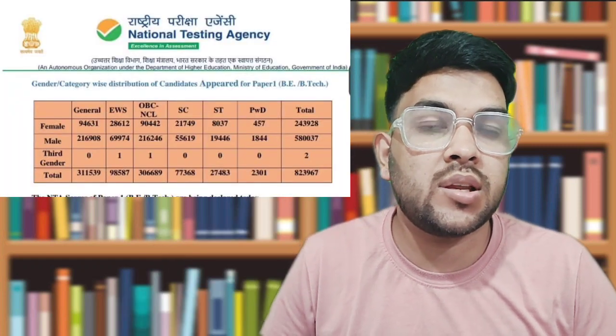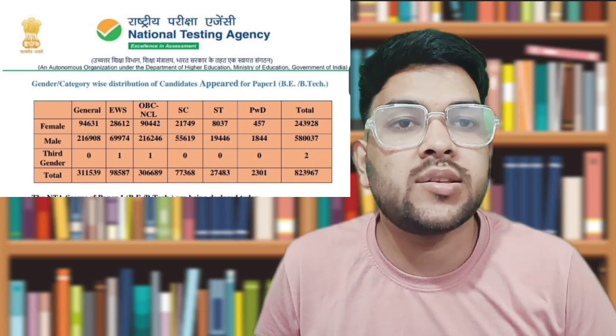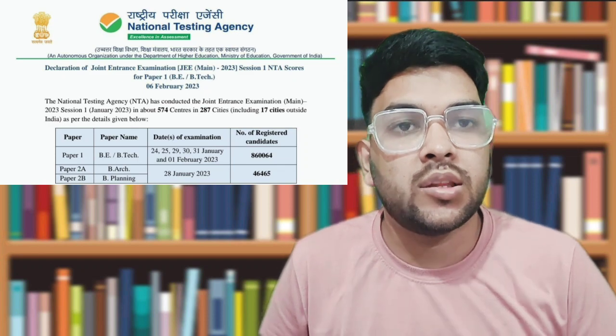The total number of students that appeared this year in the first session is 8,23,000 and registered were around 8,60,000. Last year, 8,70,000 students were registered but only 7,70,000 appeared in the exam, so this year a little more students appeared in the first attempt.